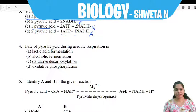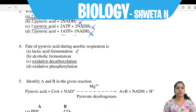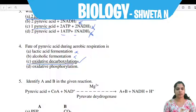Next question: What is the fate of pyruvic acid during aerobic respiration? Pyruvic acid is the end-product of glycolysis. During aerobic respiration it undergoes further processing. Lactic acid fermentation happens during anaerobic respiration — that is wrong. Alcoholic fermentation is also anaerobic — also wrong. Oxidative phosphorylation is correct.